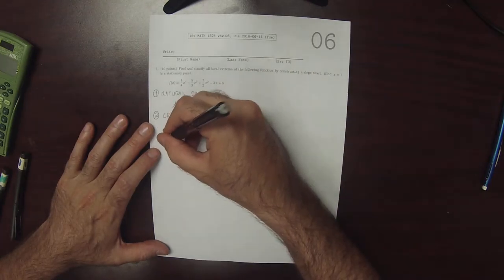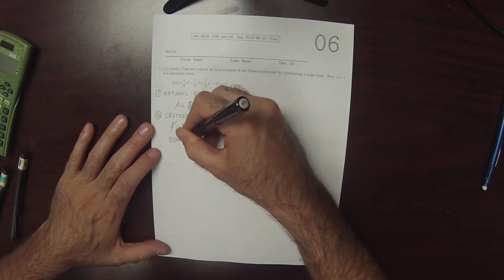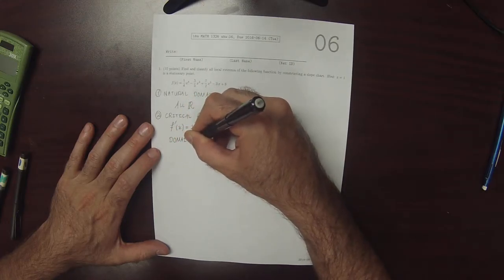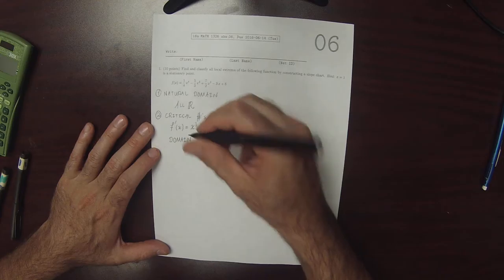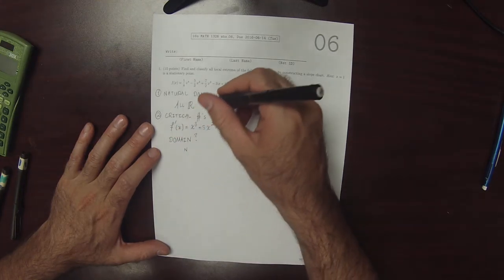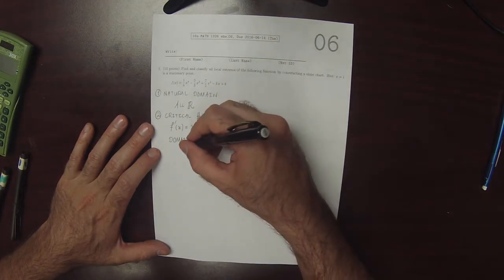And then we just computed the derivative, so that means we need to check the domain. And because the derivative is a polynomial, that means there's no change.